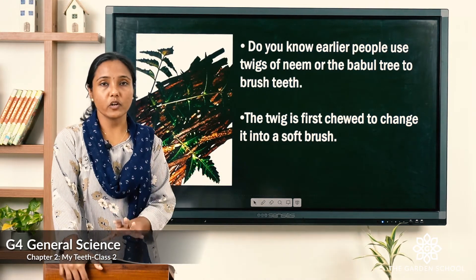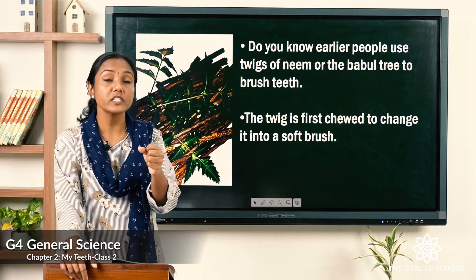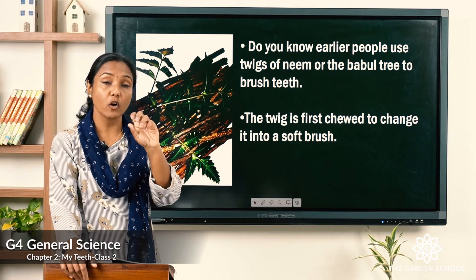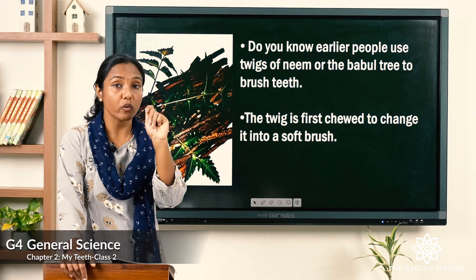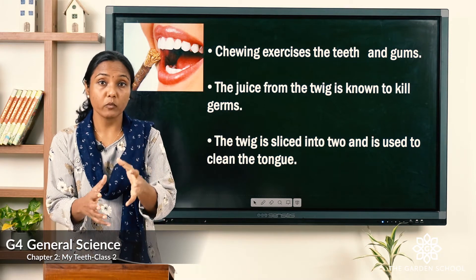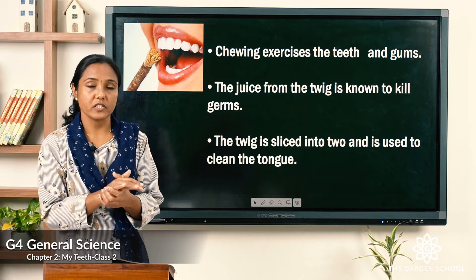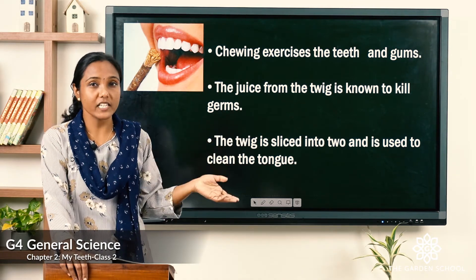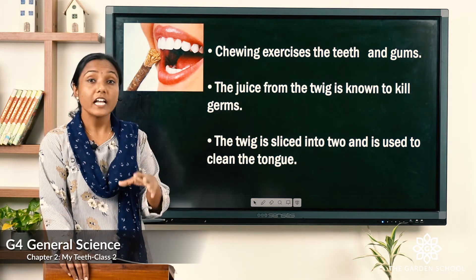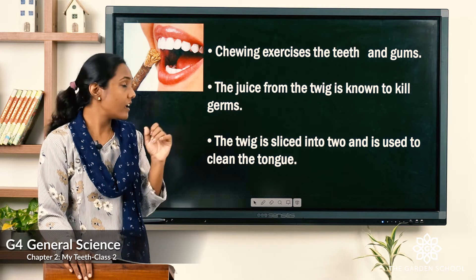In ancient times, before toothpaste, people used twigs of the babul tree and neem tree. They would take a twig, crush and chew it to make a soft bristle-like brush, and use it to clean their teeth. It is believed that chewing neem or babul twigs strengthens the gums and teeth, and the juice of those twigs is known for killing germs. People still use these twigs today; they also slice the twig to use it for tongue cleaning.